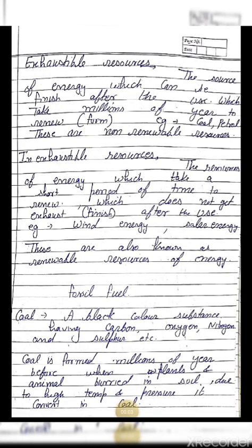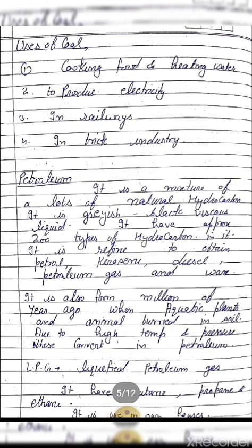Good morning students. Yesterday we discussed about fossil fuels — that is coal, a black layered substance having carbon, oxygen, nitrogen, and sulfur in it. Coal is formed millions of years ago when plants and animals were buried in the soil due to any crisis. Then due to high temperature and pressure, these plants and animals converted into coal.